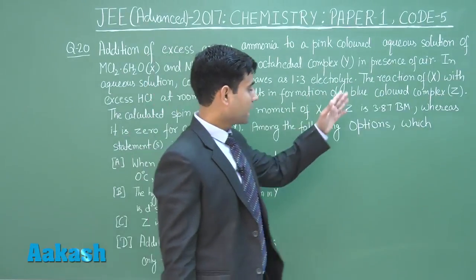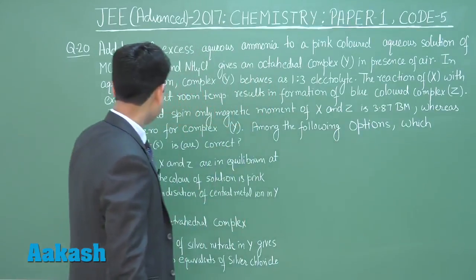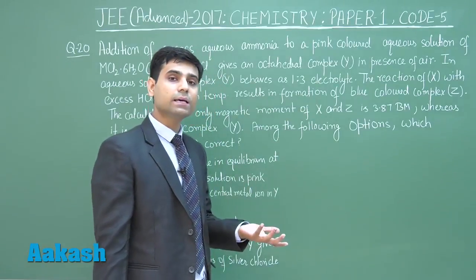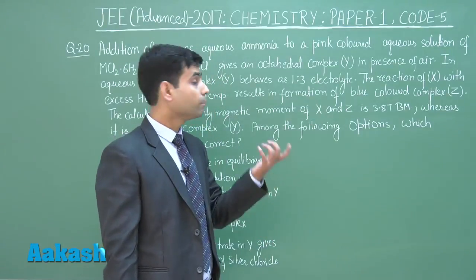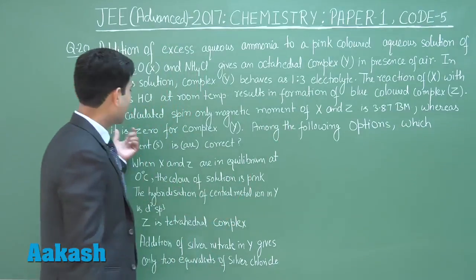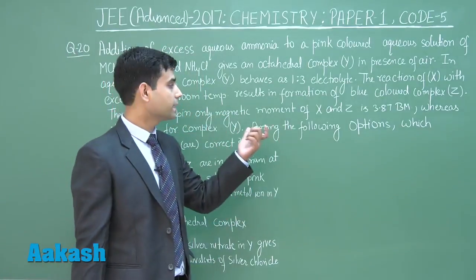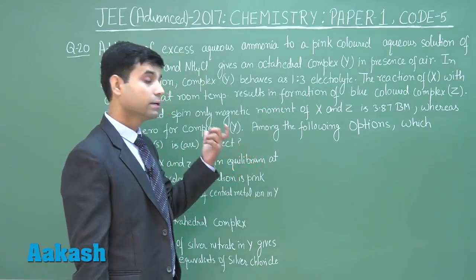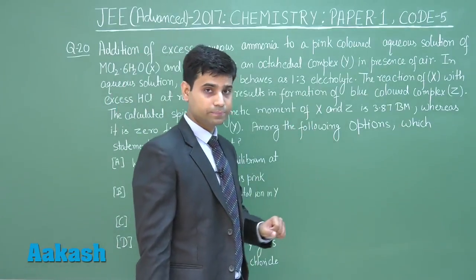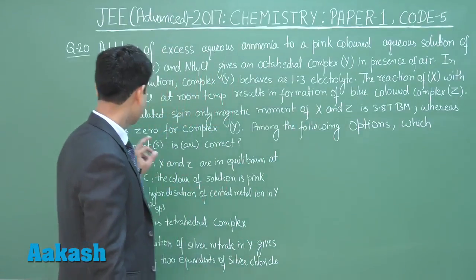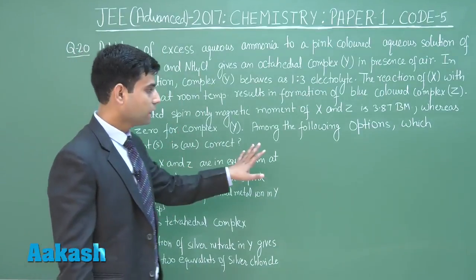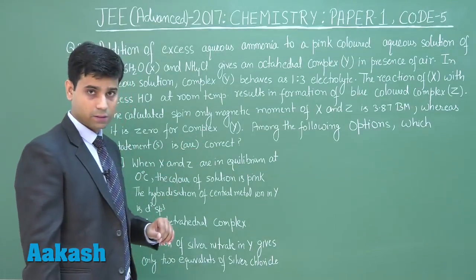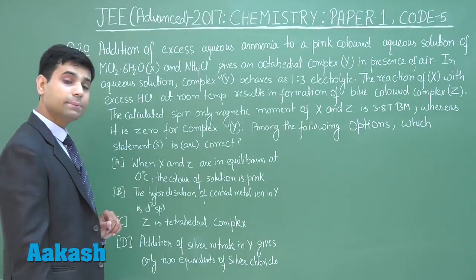A 1:3 electrolyte means three anions will form. The reaction of X with excess HCl at room temperature results in formation of blue colored complex Z. The calculated spin-only magnetic moment of X and Z is 3.87 Bohr magneton, whereas it is 0 for complex Y. Among the following options, which statements are correct?